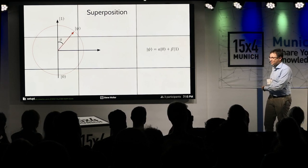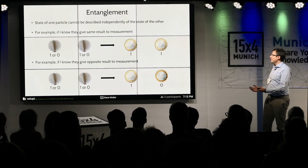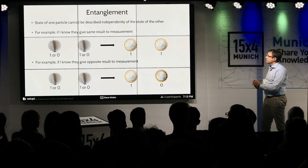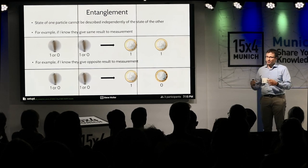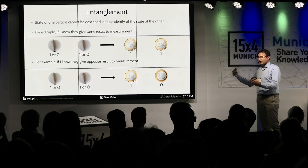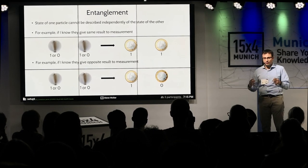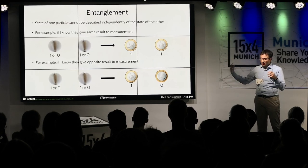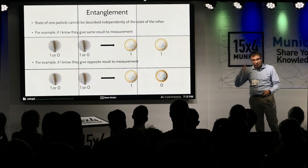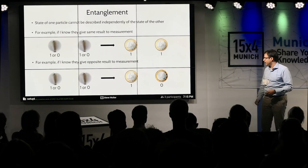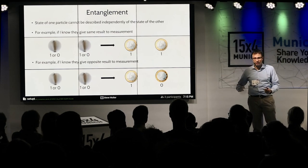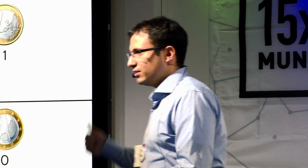But as I said, this is not enough. We need to use another property: entanglement, or interconnection. Entanglement is when two particles are connected in a way that the state of one particle cannot be described independently from the second particle. If I have two spinning particles and I know the results should be equal once I observe them, if I observe the first one and it's one, I automatically know the second one will also be one — they are connected. Similarly, if I know the results should be opposite, I observe the first and it's one, I already know the other is zero without even looking.